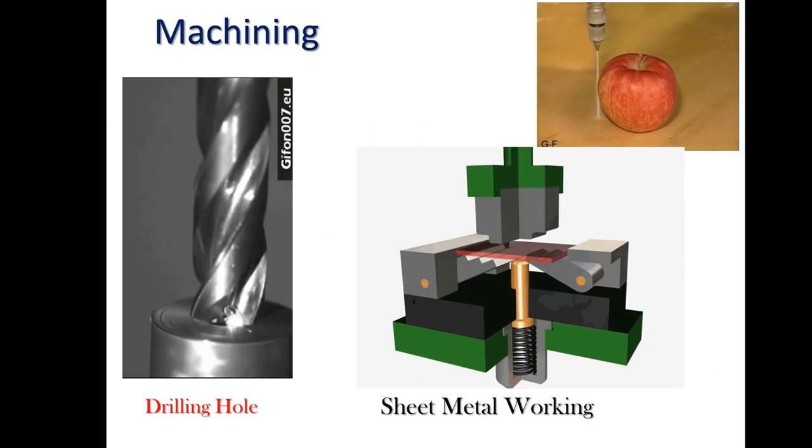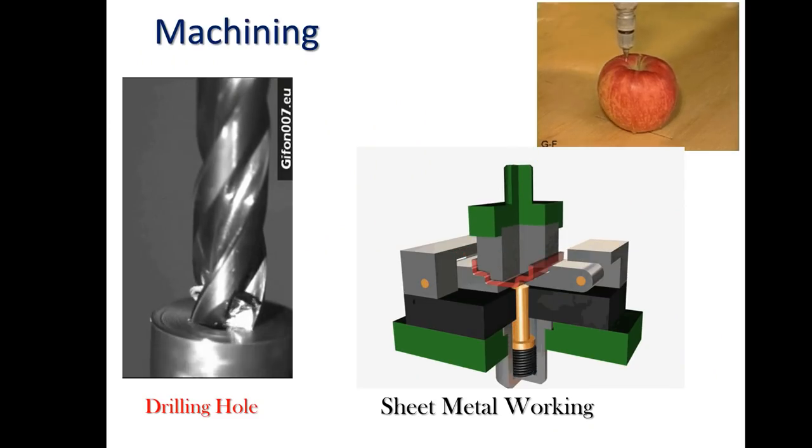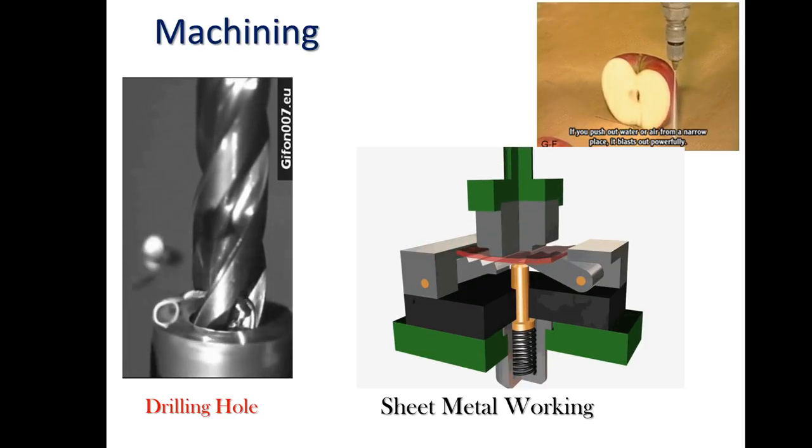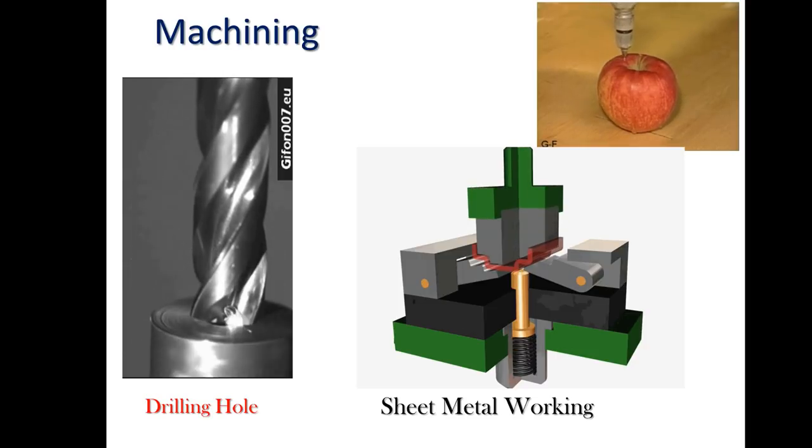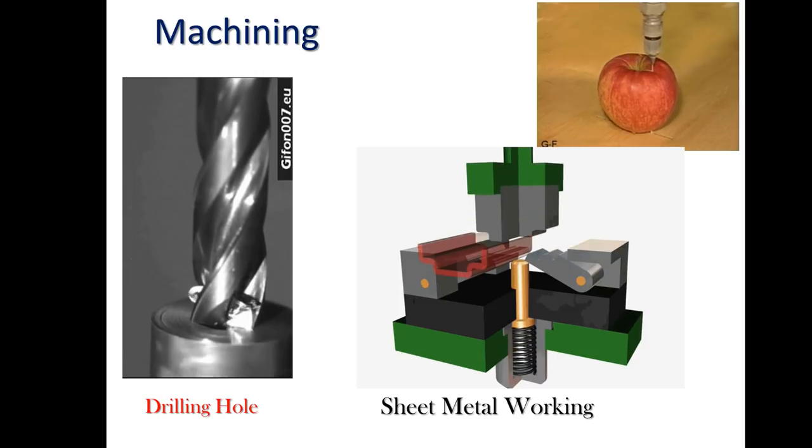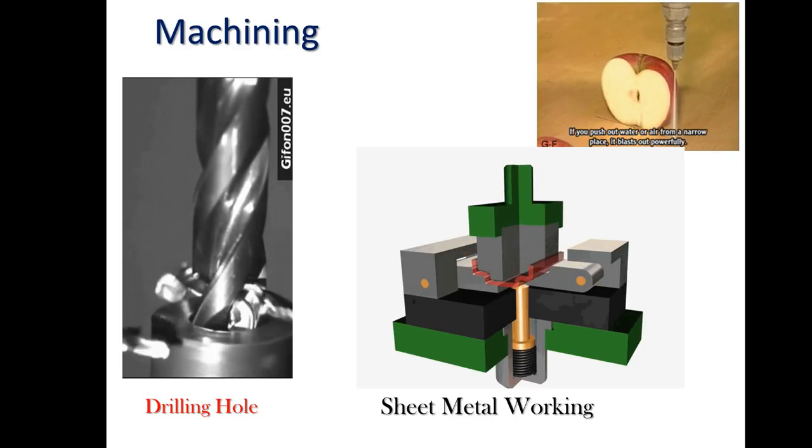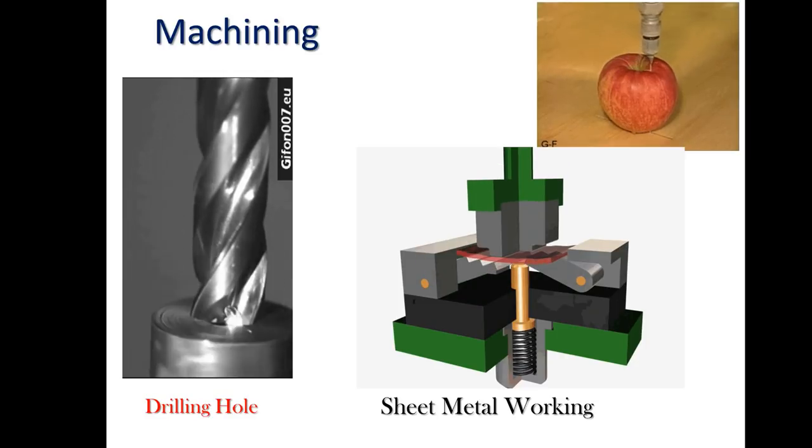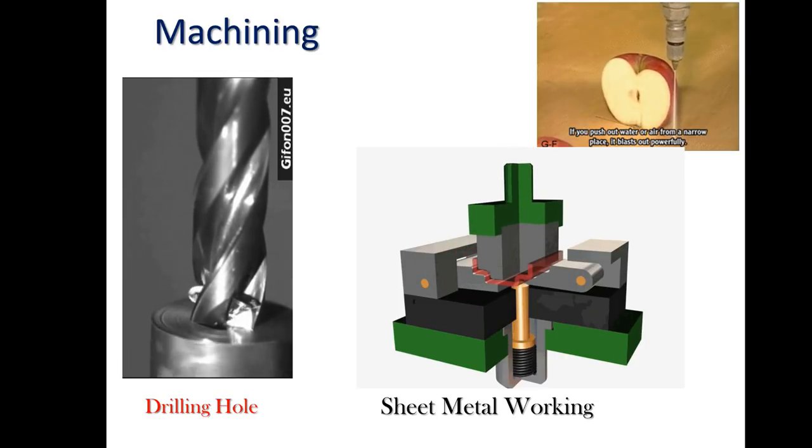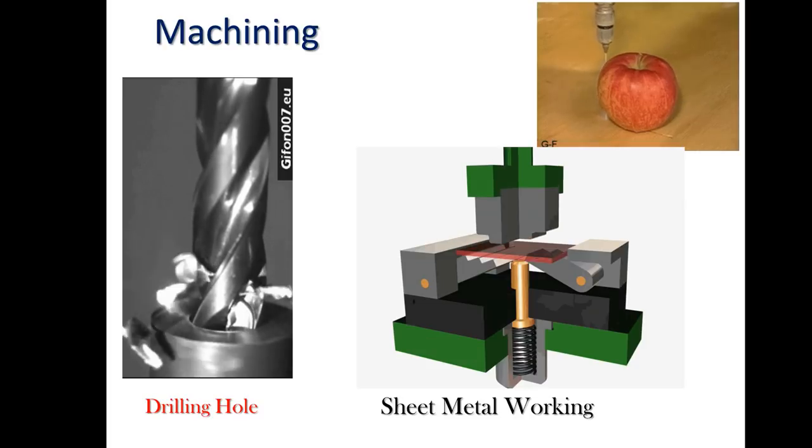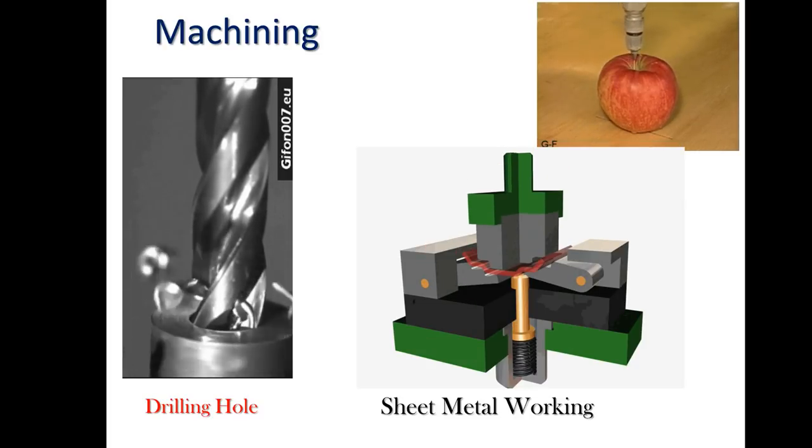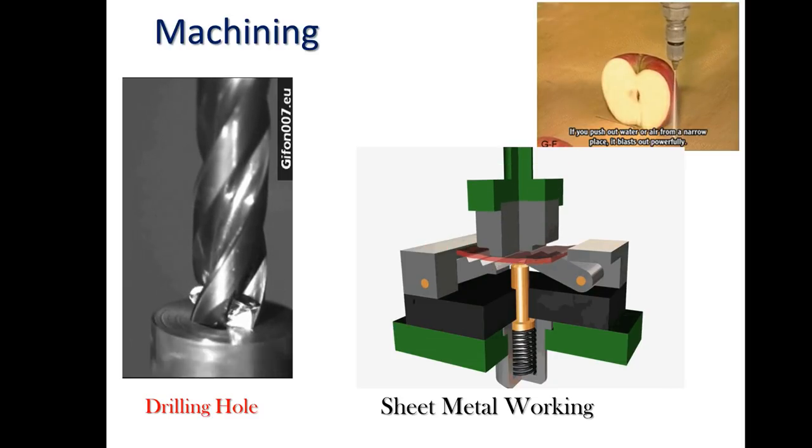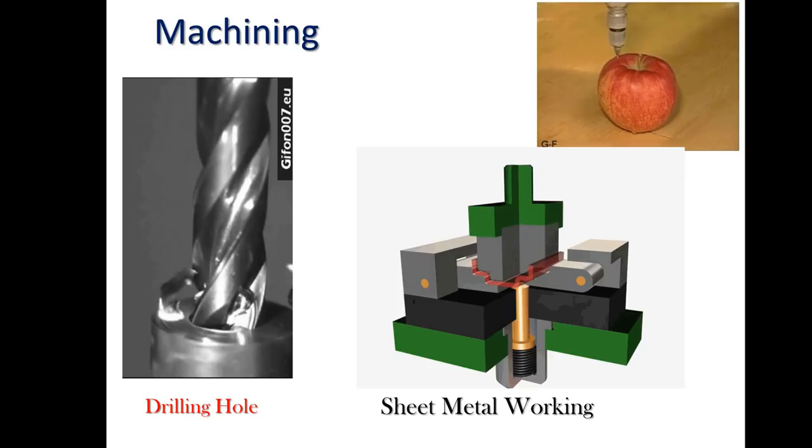Next is the machining part. Drilling hole, very simple - creating a cylindrical hole by using a drill bit, that's drilling. Here you can see by using water pressure they are cutting apple. So yes, water pressure can be used to cut even hard metal sheet also. Sheet metal working - this diagram right side where they are forming some shape on the straight plate - that is sheet metal working by using high pressure dies. We'll be dealing with this machining part in unit number four.